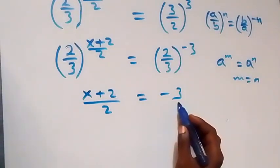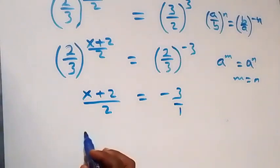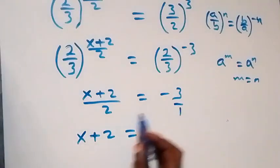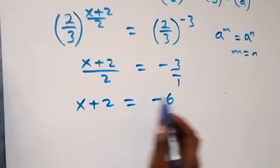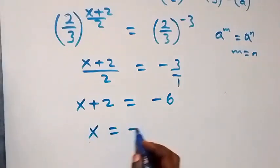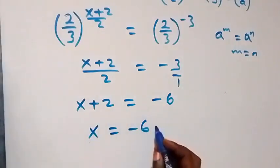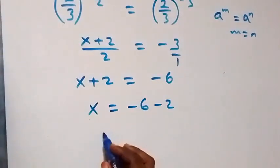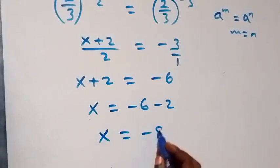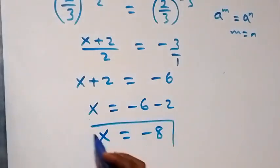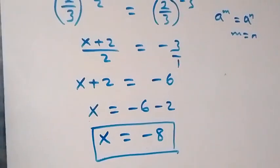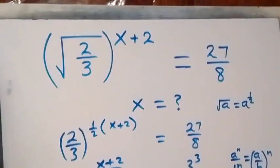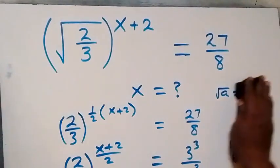This is minus 3 over 1. Cross-multiplying: x plus 2 times 1 gives x plus 2, equals minus 3 times 2, which gives minus 6. Taking plus 2 to the other side, x equals minus 6 minus 2, which gives us x equals minus 8.